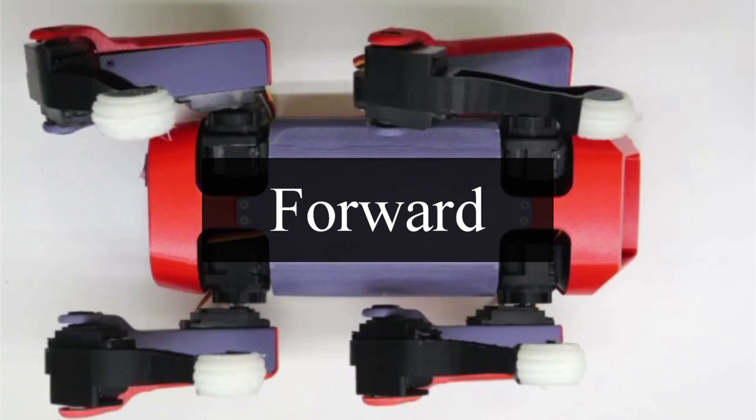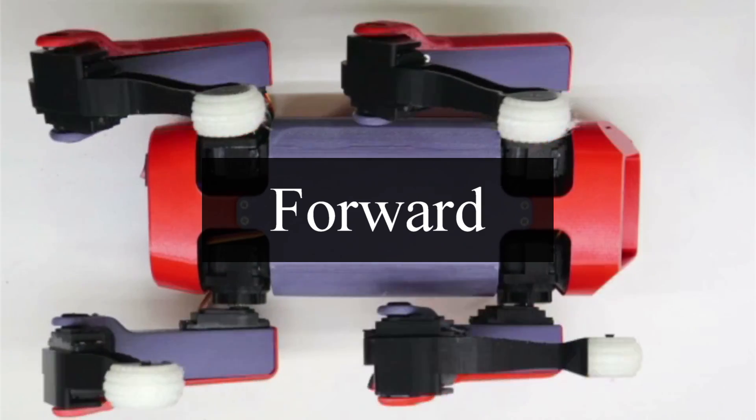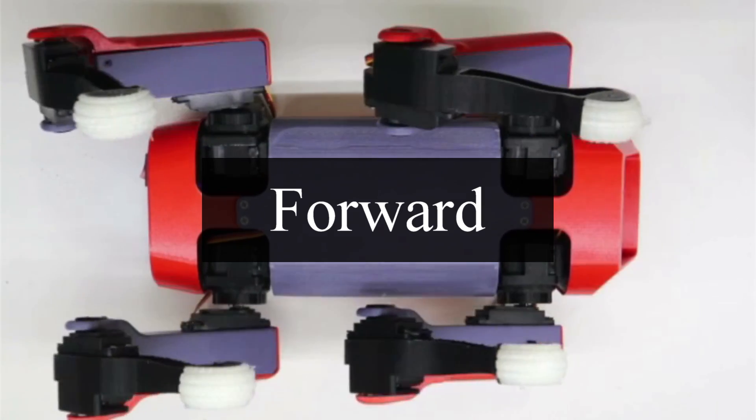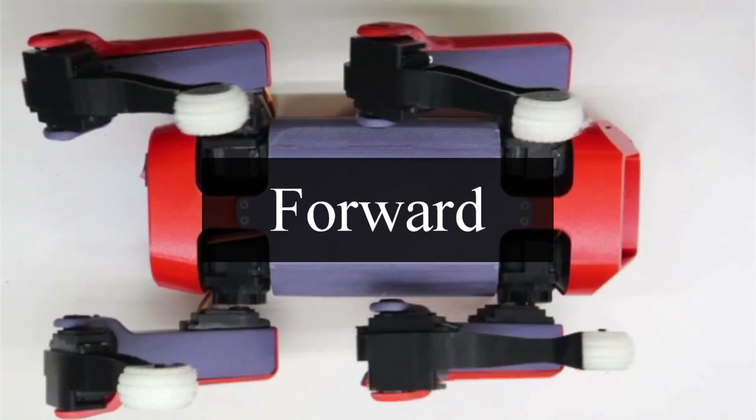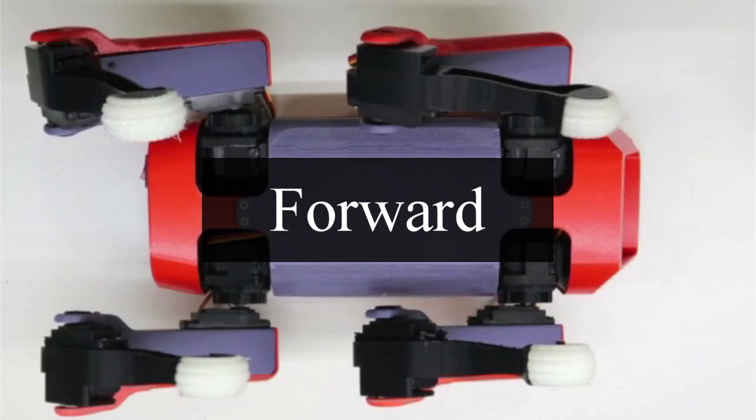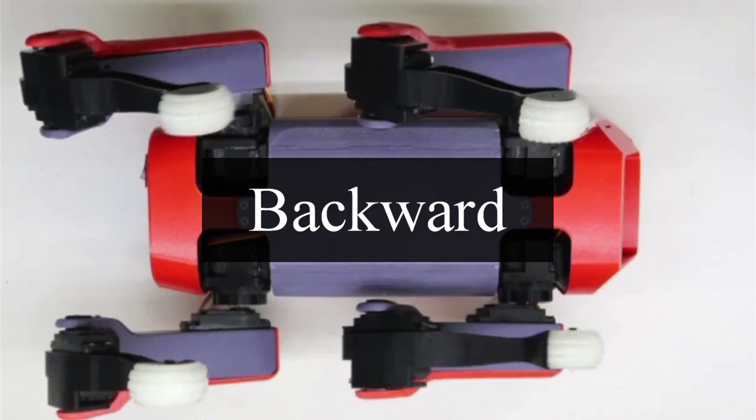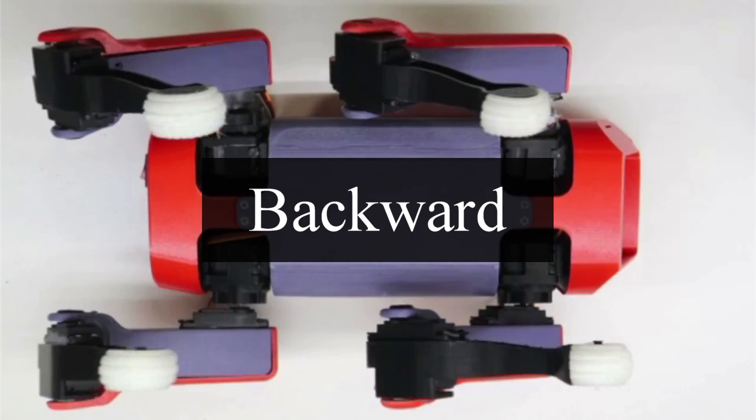For this walking gait, I synchronized diagonal pairs of legs. While one pair is taking a step, the other is maintaining balance and moving the robot. To move forward, it simply steps forward and moves the ground backwards. To move backwards, that operation can be played in reverse.